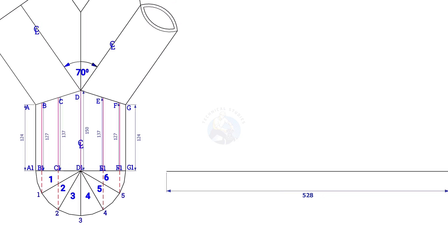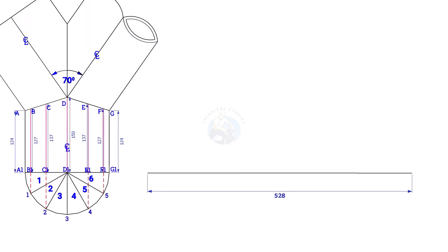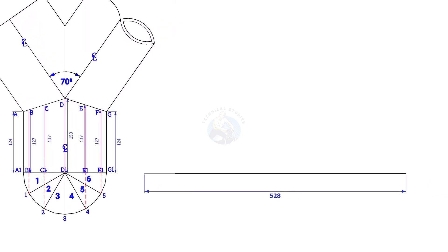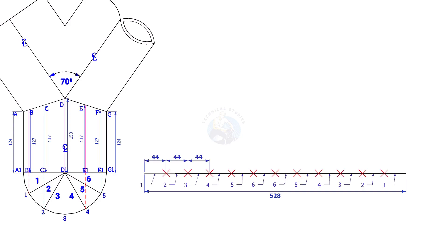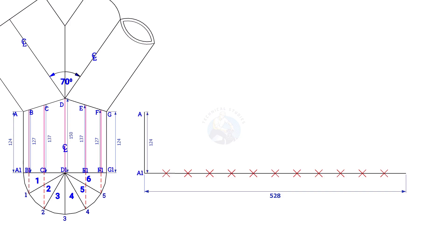Since we divided the half circle into 6 parts, divide the line into 12 equal parts. 528 divided by 12 is 44, so the length of each segment is 44mm. Draw a perpendicular line at the start of this line; the length shall be 124mm.